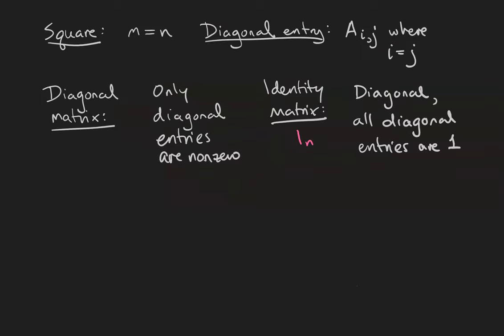Here's some handy words that'll help us understand matrices and therefore relations a little bit better. A square matrix is one where the number of rows is equal to the number of columns. A diagonal entry is any entry where the row and column index are the same.